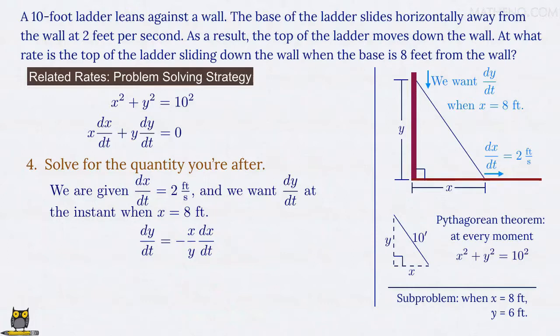We have, at the moment we're interested in, x equals 8 feet and y equals 6 feet, so we can make those substitutions. And we were given that dx/dt equals 2 feet per second. So now we're just left with multiplication. Negative 8 over 6 times 2 is negative 8 over 3. And looking at units, the feet in the numerator and denominator here cancel, and so we're left with feet per second, as we expect. It's the same units that dx/dt has. And that's it. Our final answer is dy/dt equals negative 8 thirds feet per second.